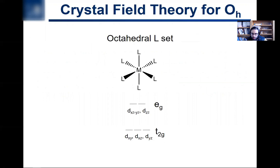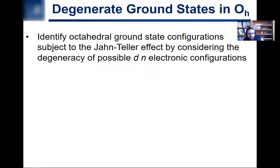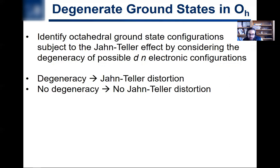For a perfectly symmetrical octahedral complex, it's going to have point group Oh with six identical ligands and all the symmetry elements that an octahedron has. This results in a splitting of the d orbitals into three T2g orbitals that are lower in energy than the two Eg orbitals. Now we're going to identify which octahedral ground-state configurations are going to be subjected to this Jahn-Teller effect by looking at whether there's any degeneracy in the possible electronic configuration.